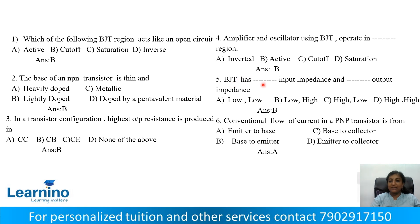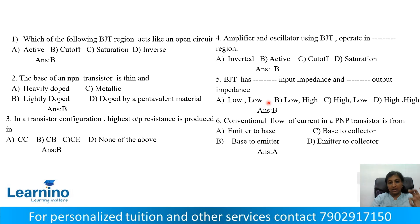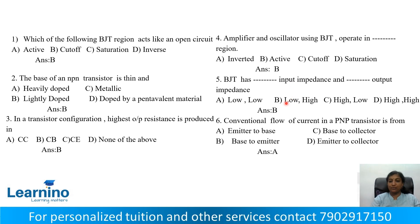Question number 5: BJT has dash input impedance and dash output impedance. Options: A — Low and Low, B — Low and High, C — High and Low, D — High and High. BJT has low input impedance and high output impedance. Correct answer is Option B.